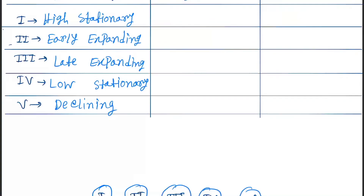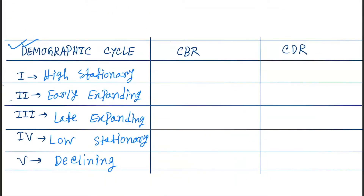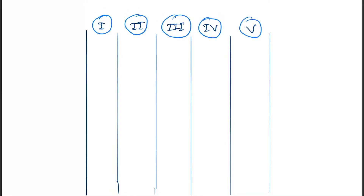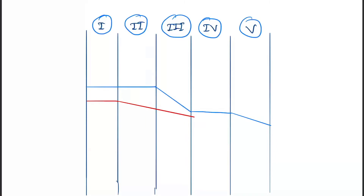Let's draw the graph first, then we'll understand CBR and CDR. First, draw the CBR — the crude birth rate — which goes up, then starts declining. Next is CDR, which follows a different curve going down through the phases.